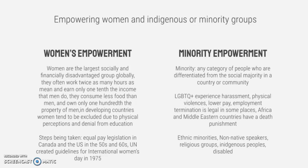Now we're looking at empowering women and indigenous or minority groups. Women are the largest socially and financially disadvantaged group globally — they often work twice as many hours as men but earn only one-tenth the income, consume less food, and own only one-hundredth of the property that men do. In developing countries, women tend to be excluded due to physical perceptions and denial of education. Steps being taken include equal pay legislation in Canada and the US in the 1950s and 60s, and the UN creating guidelines for International Women's Day in 1975.